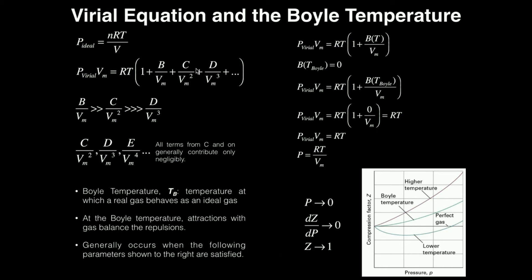So this is a simple derivation showing that, assuming you neglect all terms past B, if you use the Boyle temperature in the virial equation of state, the B term goes to zero and you essentially recover the ideal gas equation. The Boyle temperature is the temperature at which a real gas behaves ideally, which makes sense because we assumed the Boyle temperature and derived the ideal gas equation from the virial equation.